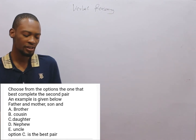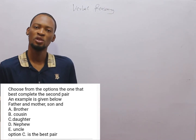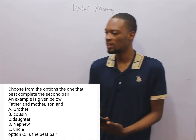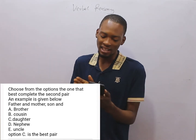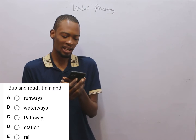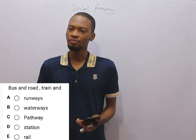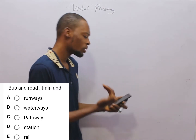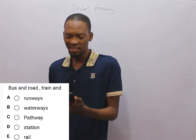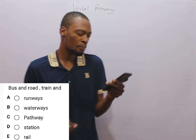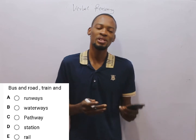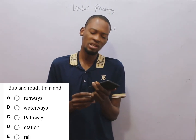The opposite of father is mother, the opposite of son is daughter. So this is the instruction we shall be following. Apart from asking you to arrange things in ascending or descending order, which we treated earlier, you can also be asked to look for pairs that make more sense. In this main question, it says: bus and road, train and dash. What is the relationship between bus and road? Buses simply pass on the road. Then where does a train pass? Trains pass through rail — this is why you hear 'railway.' So the correct pair is bus and road, train and rail, as seen in option A.